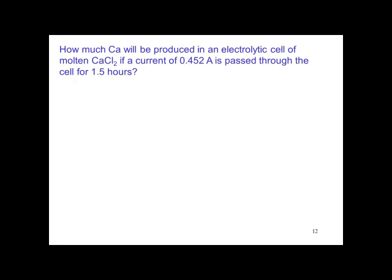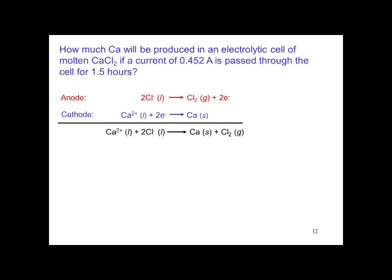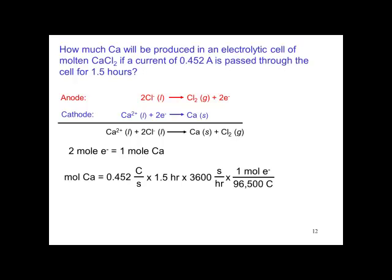How much calcium will be produced in an electrolytic cell of molten calcium chloride if a current of 0.542 amperes is passed through the cell for 1.5 hours? At the anode, we're going to get chloride oxidized to chlorine. At the cathode, we're going to get the reduction of calcium 2+ to calcium. This is the overall reaction. Two moles of electrons equals one mole of calcium. The moles of calcium is 0.542 coulombs per second times 1.5 hours times 3,600 seconds per hour times one mole of electrons over 96,500 coulombs times one mole of calcium over two moles of electrons. This will generate 0.0126 moles of calcium, or 0.50 grams of calcium.